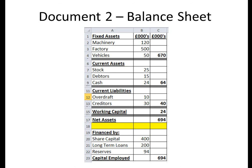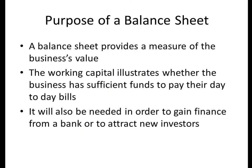Adding those together gives Capital Employed of £694. Net Assets and Capital Employed must always be the same — that's why it's called a balance sheet, because those two figures balance. So the top half shows what we've bought, and the bottom half shows where the money came from. A balance sheet provides a measure of the business's value — for example, if owners wish to sell, prospective buyers would want to know how much the business is worth. Working Capital shows whether the business has sufficient funds to pay day-to-day bills, and a balance sheet is also needed to attract external finance from banks or investors.